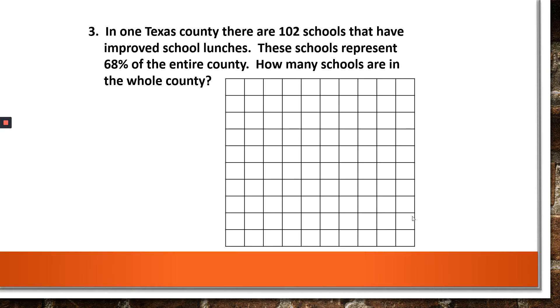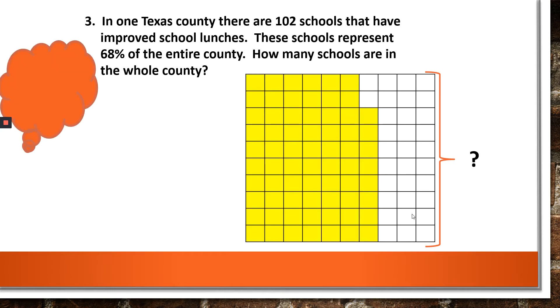Next problem. In one Texas county, there are 102 schools that have improved school lunches. These schools represent 68 percent of the county. How many schools are in the whole county? Well, this is different because we don't know the whole. But what do we know? Well, the first thing we know is 68 percent. So I went ahead and shaded 68 percent for you. But I know I have to fit 102 schools into those 68 boxes. Well, my handy dandy calculator will help me or I can do it by hand. 102 divided by 68 will give you 1 and 5 tenths. Now the question is, how many schools are in all 100 boxes?